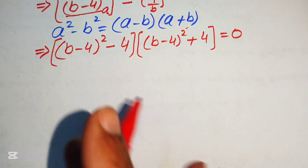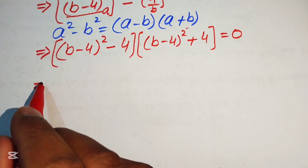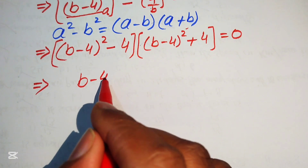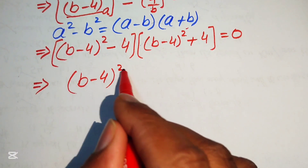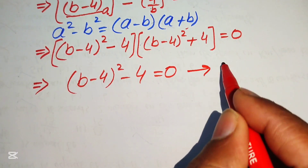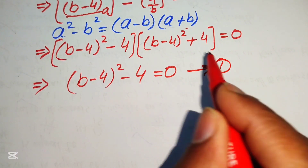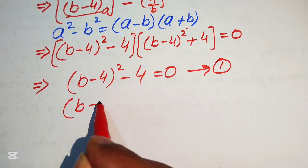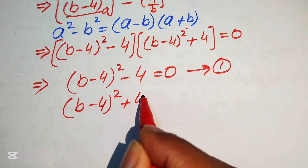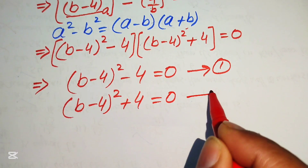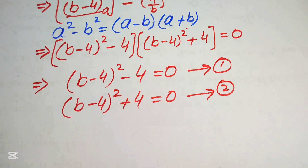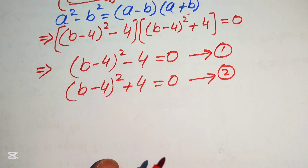We divide this into two cases. Case 1: (b minus 4) squared minus 4 equals 0. This is equation number 1. Case 2: (b minus 4) squared plus 4 equals 0. This is equation number 2.